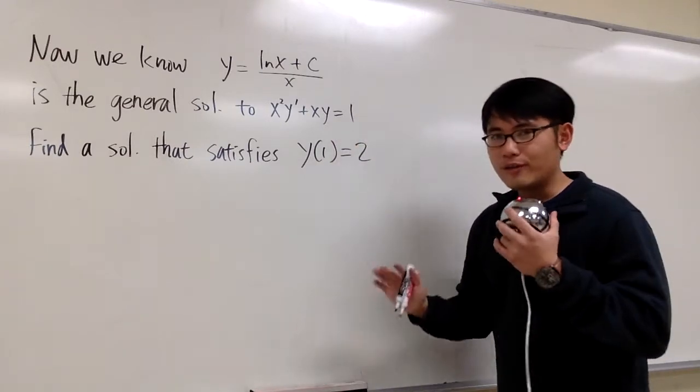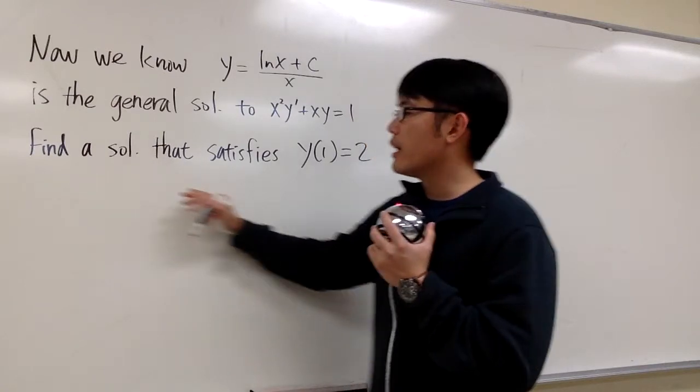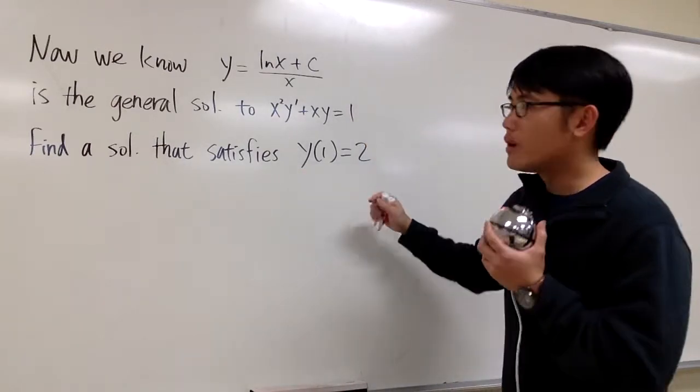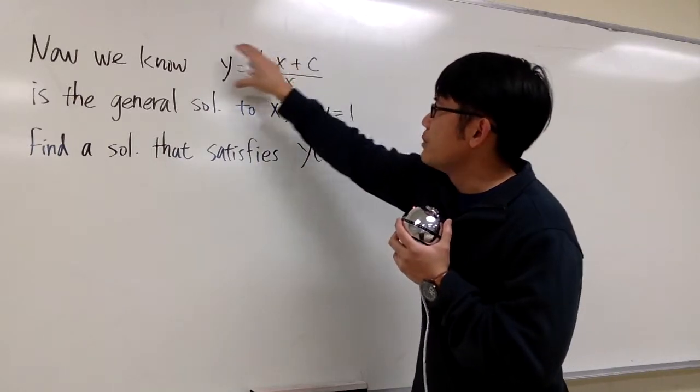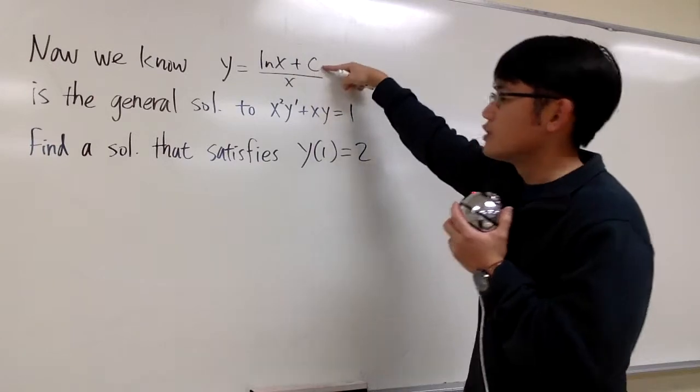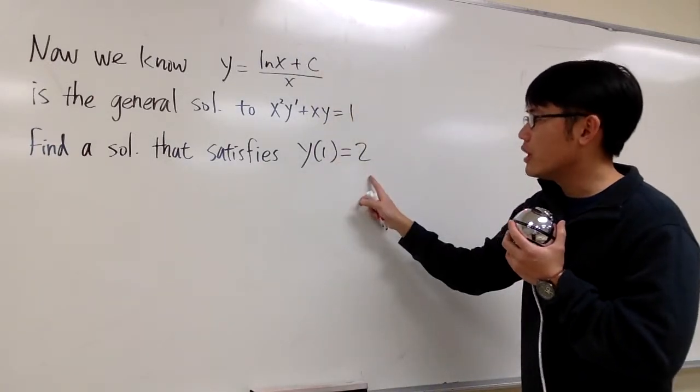And now we would like to find a particular solution, a specific solution that will satisfy this initial condition as well. However, we know the solution has to be in this form already. And the reason that we say this is general is because we just don't know what the c value is. And now with this initial condition...